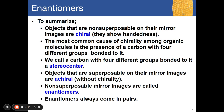To summarize: a chiral molecule shows handedness — it is non-superposable on but is a mirror image of its enantiomer. A stereocenter is a carbon with four different groups bonded to it. An achiral molecule produces a superposable mirror image, usually resulting from a non-stereocentered carbon. Non-superposable mirror images are called enantiomers, and they always come in pairs.